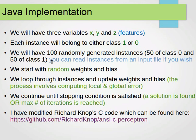We continue until a stopping condition is satisfied — either the error reaches zero or we reach the maximum number of iterations. The code was originally written in C by Richard Knopp. I've modified and converted it into Java so it works with randomly generated points.